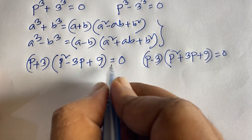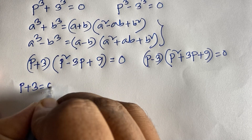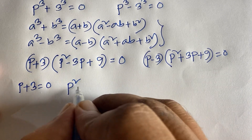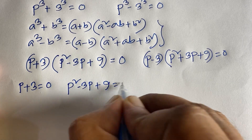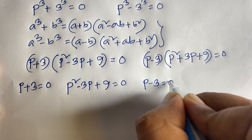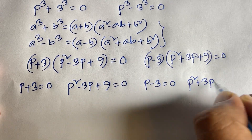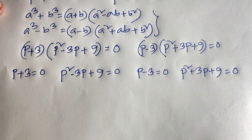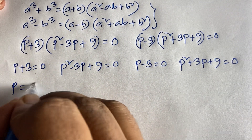From the linear factors: p + 3 = 0 gives p = −3, and p − 3 = 0 gives p = 3. The remaining quadratic cases are p² − 3p + 9 = 0 and p² + 3p + 9 = 0, which we solve using the quadratic formula.